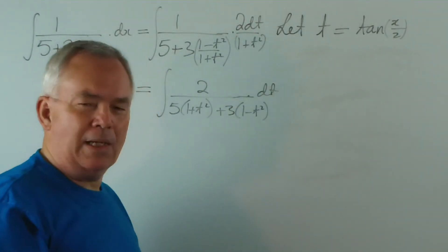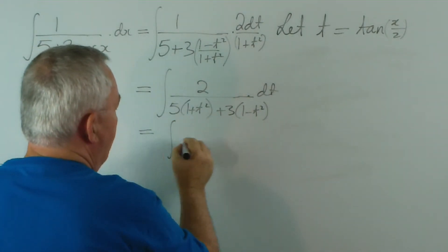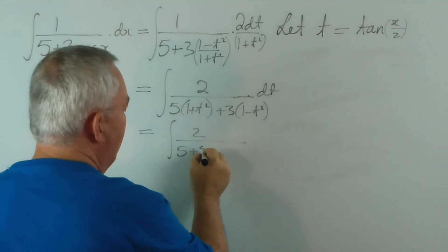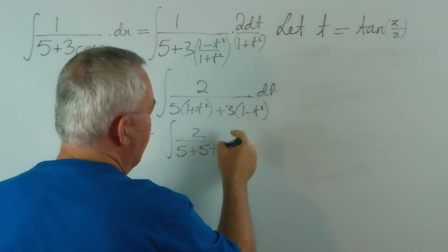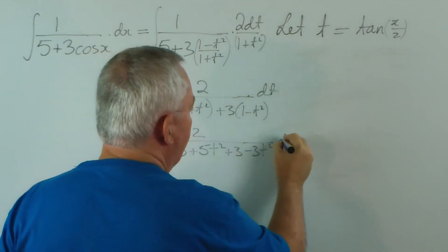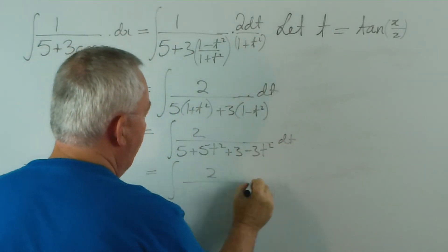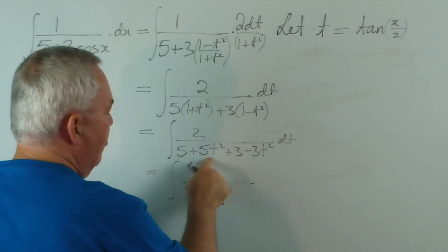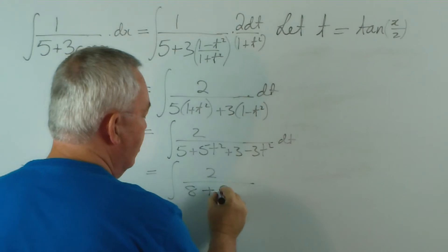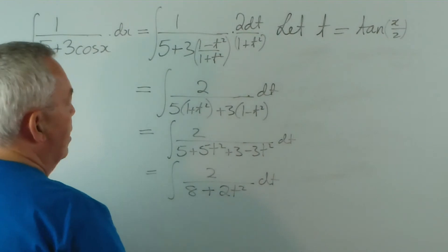So this is actually starting to resolve quite nicely. The integral of 2 over [5 times, expanding the parentheses now, (1 + t squared) plus 3 times (1 - t squared), which is 5 + 5t squared - 3 + 3t squared, so 5t squared minus 3t squared is plus 2t squared] dt.